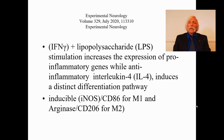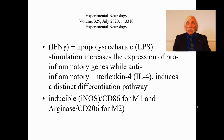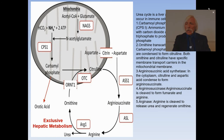A paper published in Experimental Neurology in July of 2020 showed that interferon gamma and lipopolysaccharide, when added together, stimulate and increase the expression of pro-inflammatory genes, while anti-inflammatory interleukin-4 induces a distinct differentiation pathway. In the laboratory setting, inducible iNOS and CD86 are biomarkers for M1 macrophages, and arginase and CD206 for the M2 populations — some of the biomarkers for those two classes of macrophages, both of which can exist as microglia in the CNS and in the periphery.